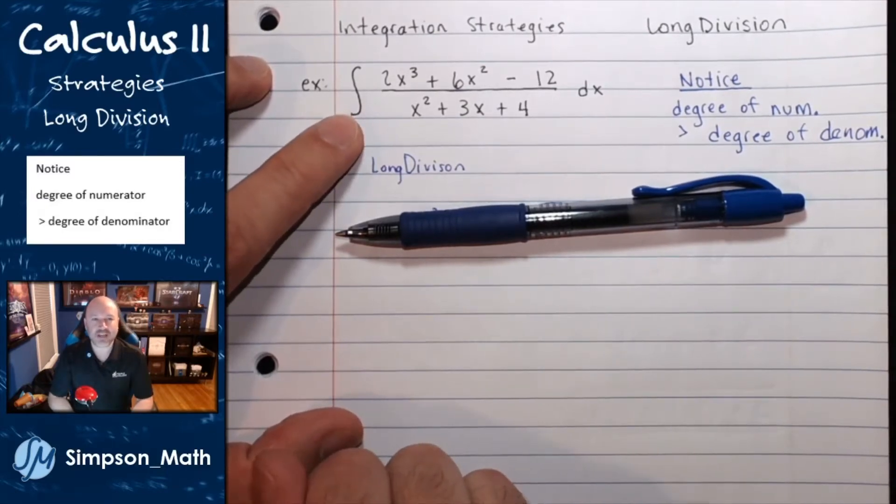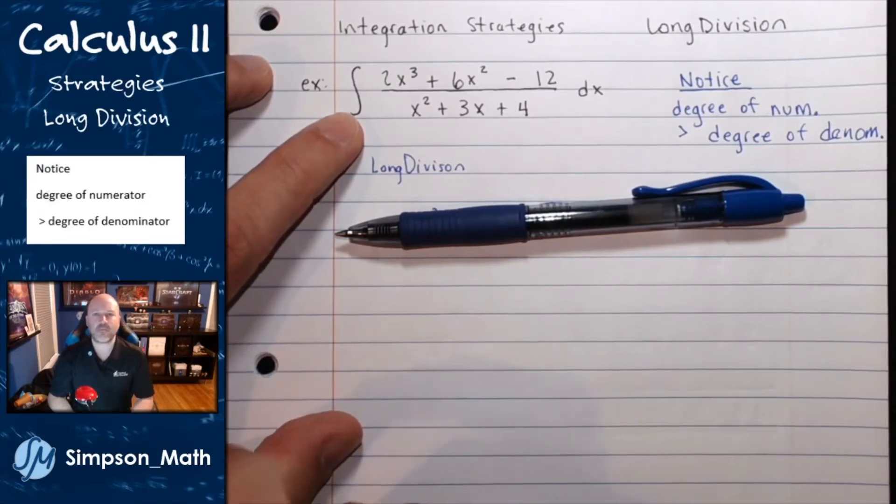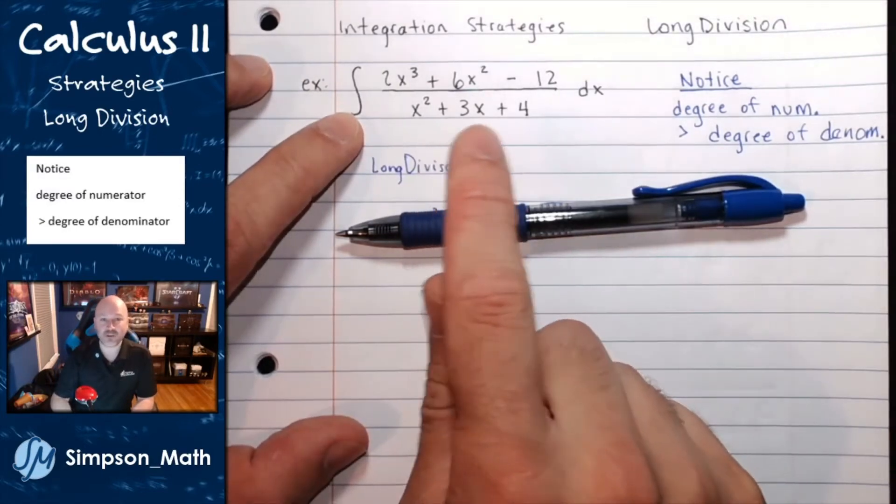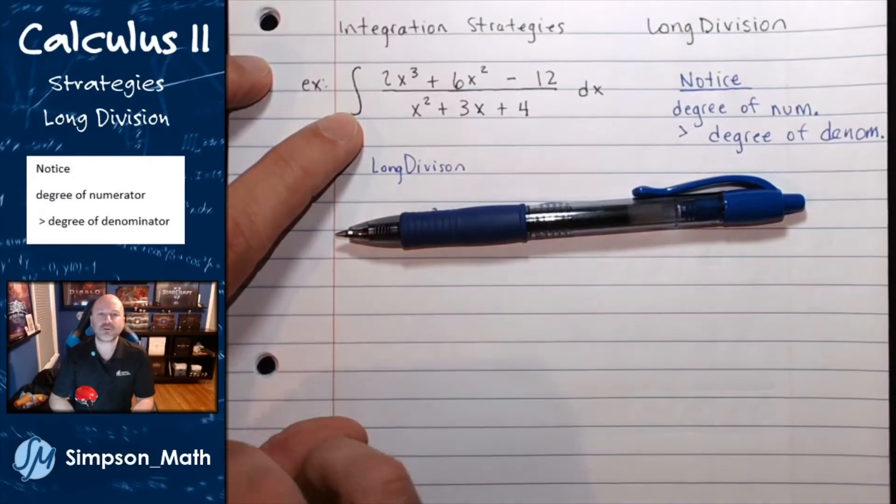At first glance, when I see this integration, you may try some u-substitution, but if that doesn't work out, you could try and factor these polynomials. But if those aren't coming out nicely,